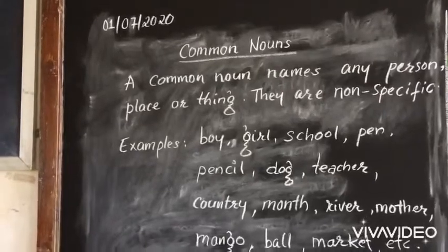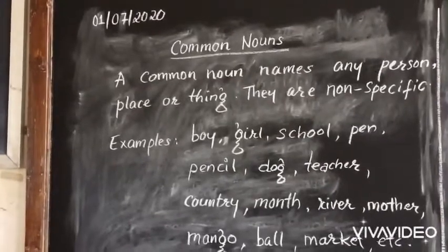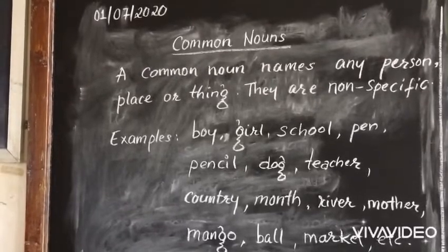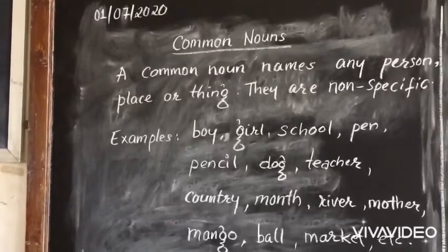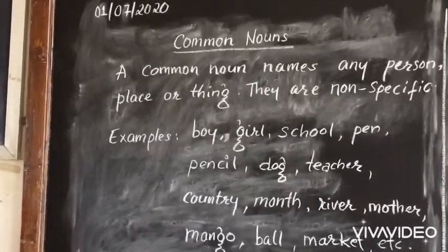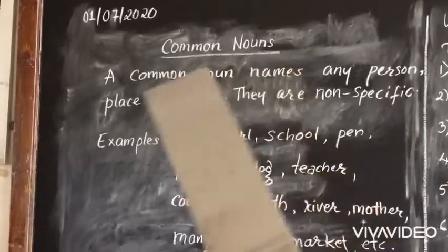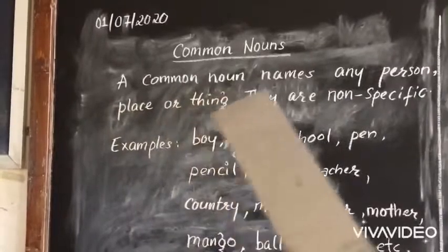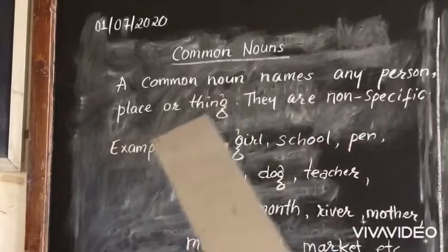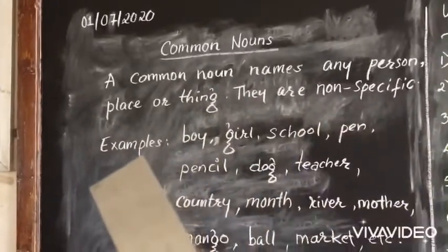Hello children. In our last video we have learned about proper nouns. A proper noun names a particular person, place or thing. Today let us learn about common nouns. A common noun names any person, place or thing. They are non-specific.